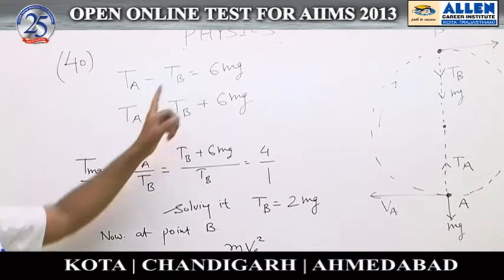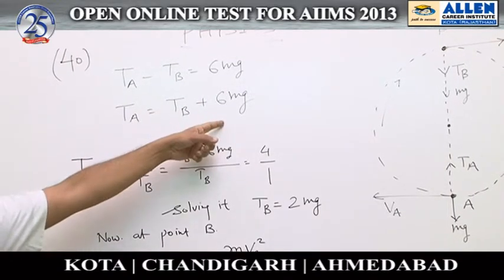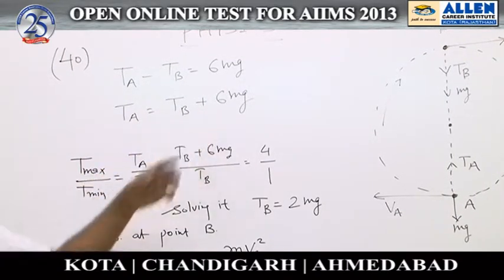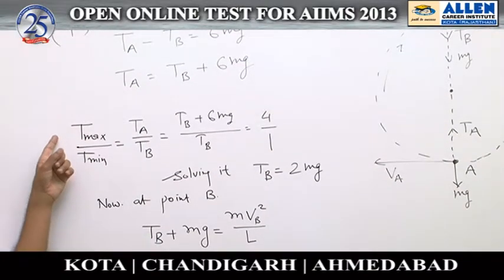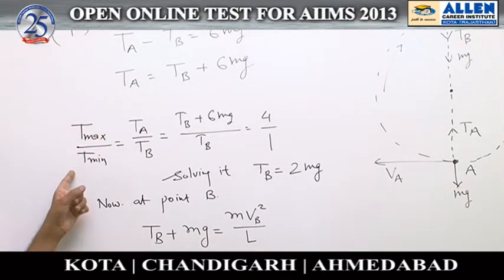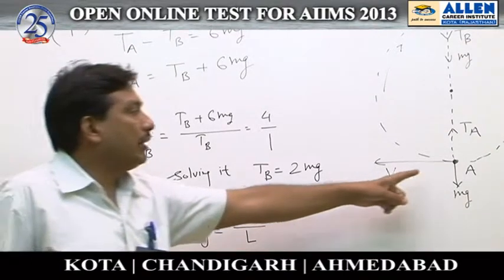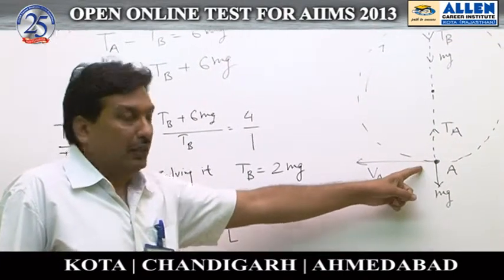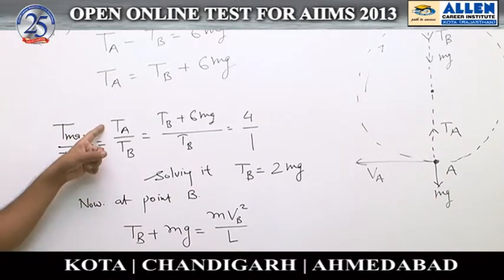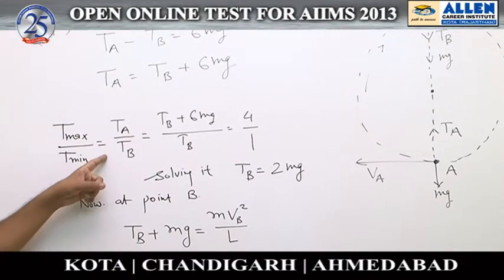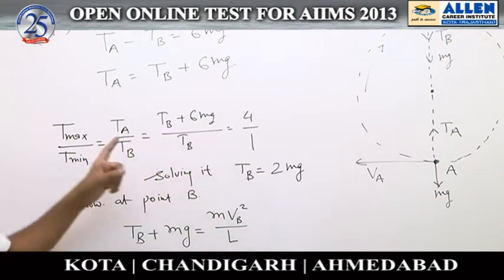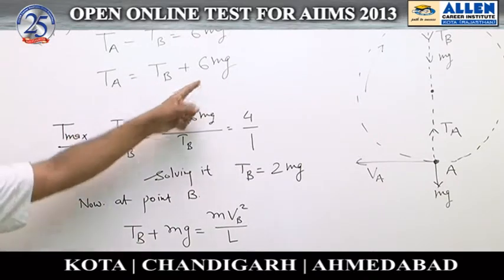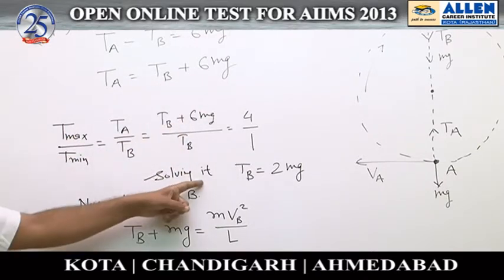Therefore T_a equals T_b plus 6mg. The ratio of maximum tension to minimum tension is given as 4, and since maximum tension is at the lower most point A, we write T_a by T_b equal to 4 by 1. Substituting T_a equal to T_b plus 6mg and solving, we obtain T_b equal to 2mg.